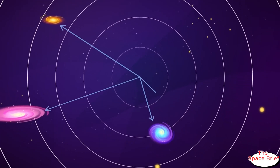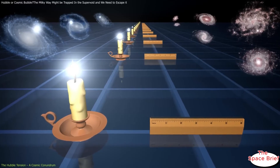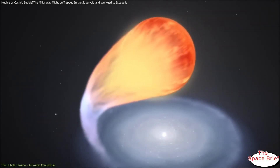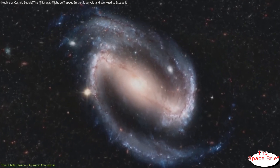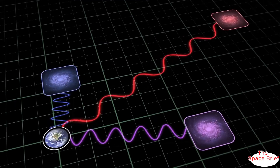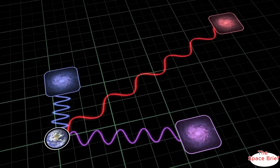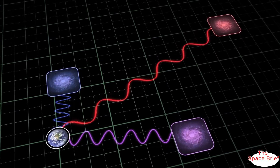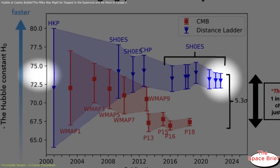By analyzing this ancient light and applying the Lambda Cold Dark Matter model, scientists estimate a Hubble constant of about 67.4 kilometers per second per megaparsec. The second method focuses on standard candles, such as Type Ia supernovae and Cepheid variable stars.